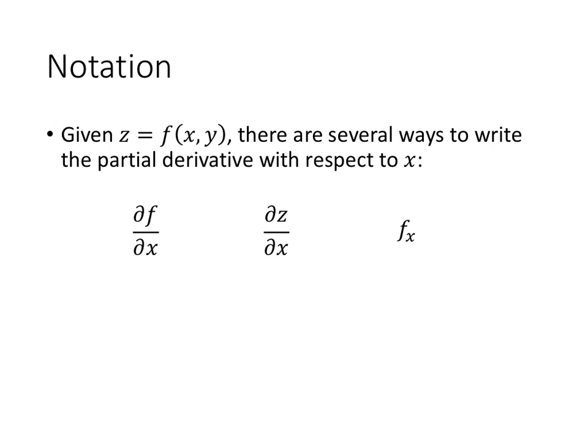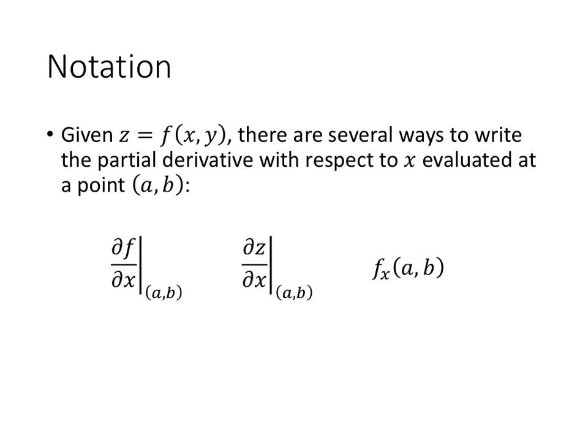We have a bunch of different notations for the partial derivative. We've already seen the del notation. If we have some function z equals f of xy, we could talk about the partial derivative of f with respect to x or the partial derivative of z with respect to x — those are really the same thing. We also sometimes write it with subscript notation: f sub x is just another way of writing the partial derivative of f with respect to x. To evaluate that partial derivative at a particular point (a, b), we use a vertical line with a subscript a, b, or the cleaner notation using the subscript and parentheses f sub x of (a, b).